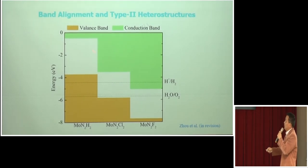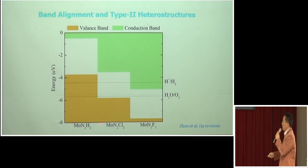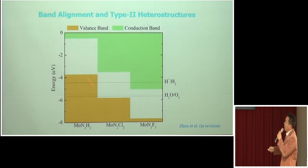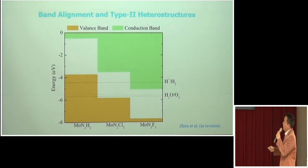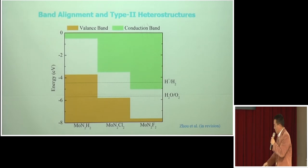We can find the band alignment between these systems. By tuning the chemical passivation unit, we can tune both the band gap and the band alignment between these 2D materials. We can also form a so-called Type-II heterostructure to achieve electron-hole separation. Thank you very much.